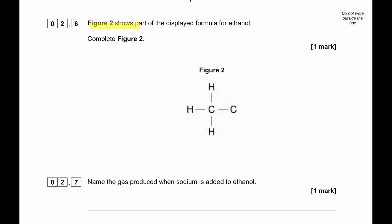Figure 2 shows the part of the displayed formula for ethanol. Complete figure 2. So we can see in this figure already two carbons are present. So the second carbon must be connected with the OH group. Alcohol group has an OH group. And the carbon, the last carbon must have two more hydrogen in order to make four bonds.